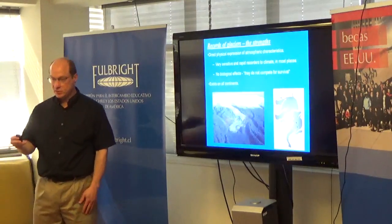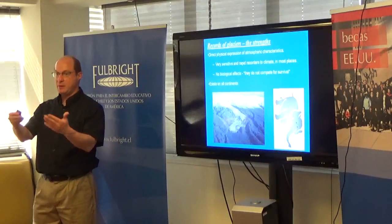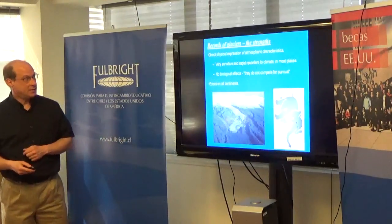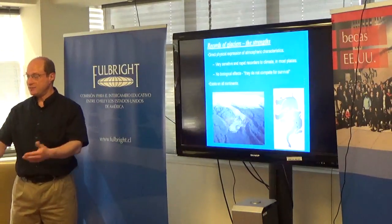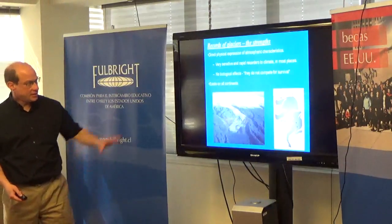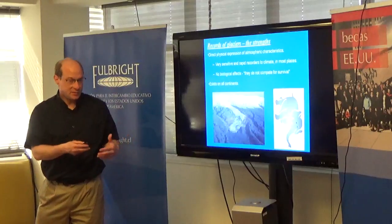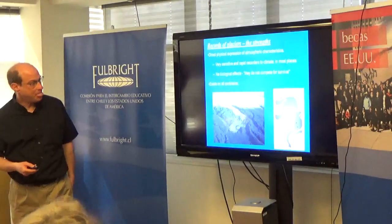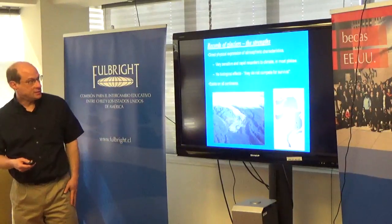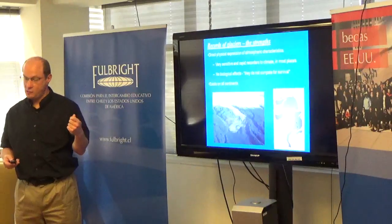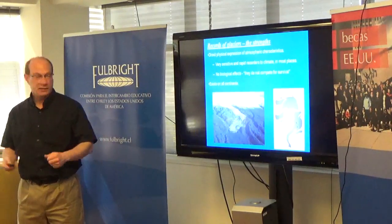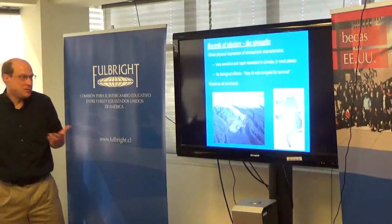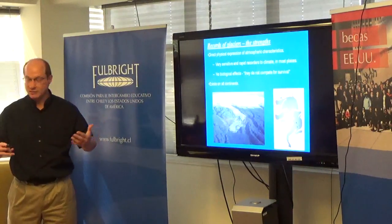You may have heard of other ways to reconstruct or learn about how climates have changed in the past. There are folks who study pollen, or use tree rings, or a lot of people use records in the ocean — marine records. Like everything, different approaches have their strengths and weaknesses. I thought I'd briefly highlight some of the strengths of using glaciers to look at past climates versus pollen, tree rings, or ocean records. One key strength is that glaciers are really sensitive recorders of the past atmosphere — they directly record what atmospheric characteristics or past climates were like. For example, there are no biologic effects which may complicate the signals in other proxies. Glaciers don't compete with each other for survival — they're a direct expression of what the former atmosphere was like.